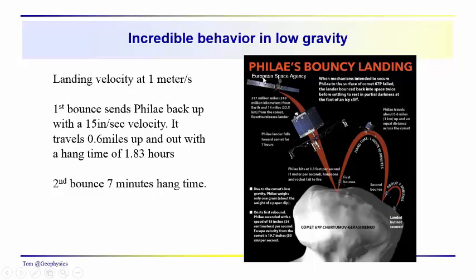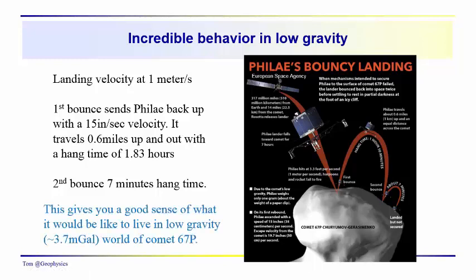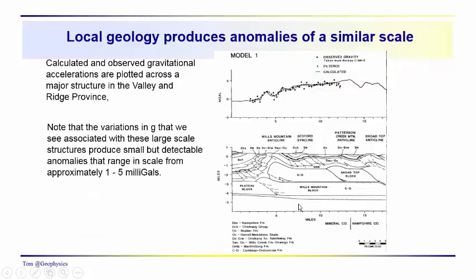Last time we saw some incredible behavior on the comet Cheryomov-Gerasimenko, or 67P, and the gravitational field there, roughing it or averaging it, would be on the order of about 3.7 milligals, or about 3.7 times 10 to the negative 5 meters per second squared. So last time we got a sense for the behavior in really low-G environments, and what it would be like to live in a low-G world of comet 67P.